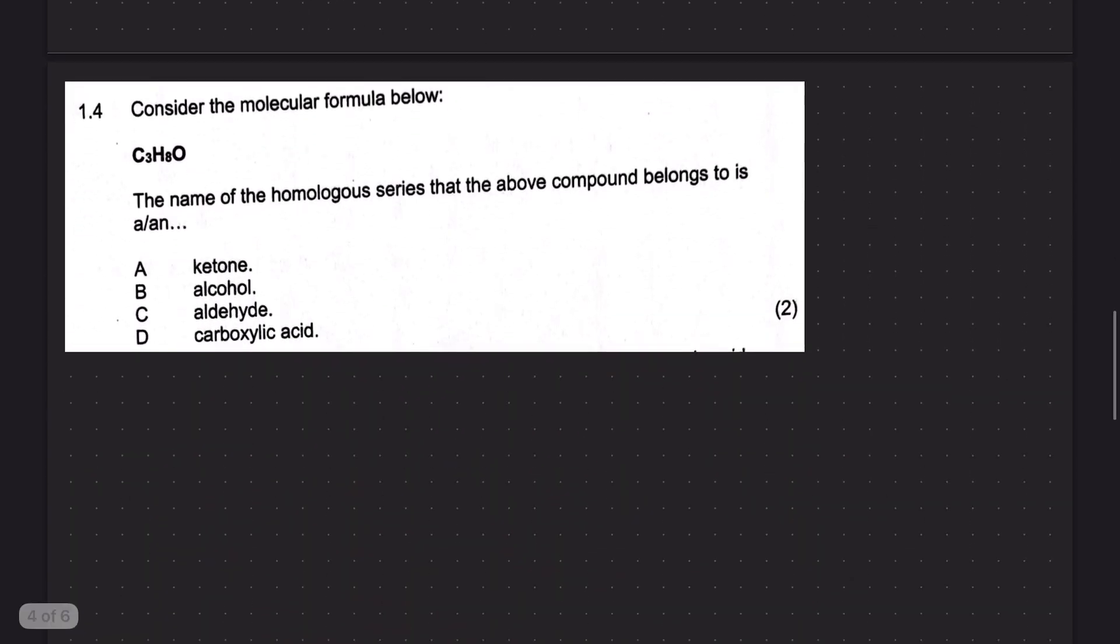Question 1.4. Consider the molecular formula below. This is an organic chemistry part. C3H8O. The name of the homology series that the above compound belongs to is ketone, alcohol, aldehyde, or carboxylic acid. So we can immediately cancel out carboxylic acid because carboxylic acids have COOH at the end. Or in other words, they have two oxygens. This clearly only has one.